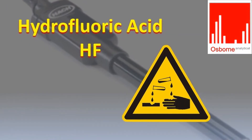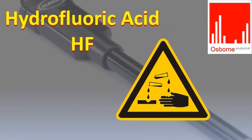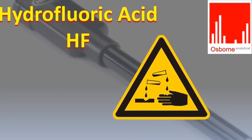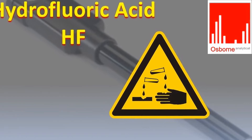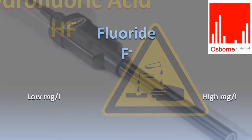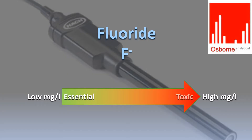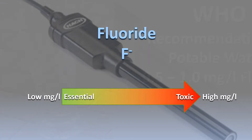One fluorine product, hydrofluoric acid, is very strong and corrosive, dissolving flesh and even glass. Fluoride, the anion of fluorine, is safe and beneficial to health at low concentrations, but toxic at high concentrations.